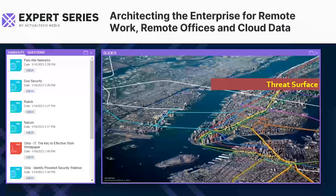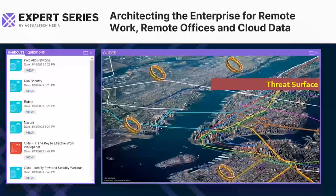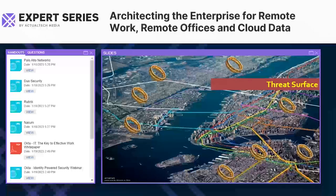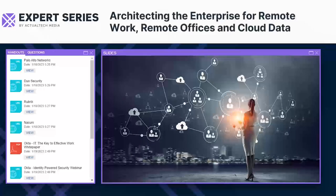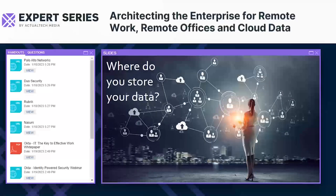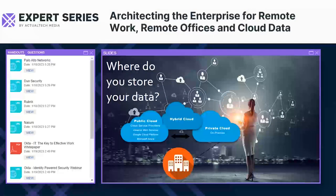The threat surface changed radically the moment everybody started running home. All of a sudden we had users scattered everywhere — users in Jersey, Brooklyn, Murray Hill — users everywhere, and we had to protect them all. Another concern was data: where are we going to store it? In the past, we stored it on on-premises servers, but those premises were compromised — we couldn't go there, we had a shelter-in-place order.